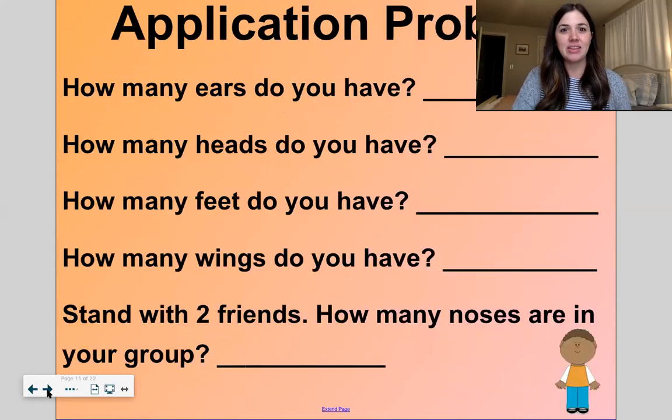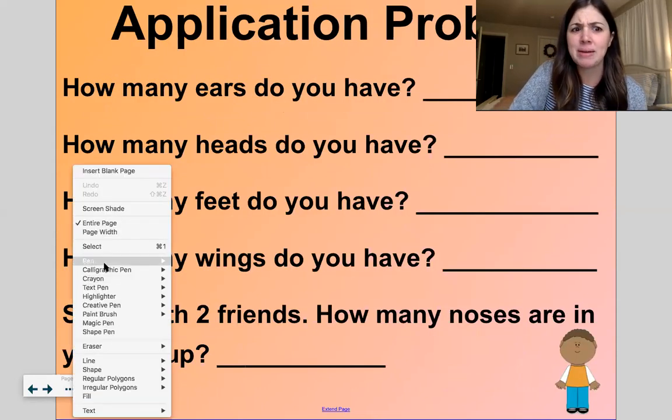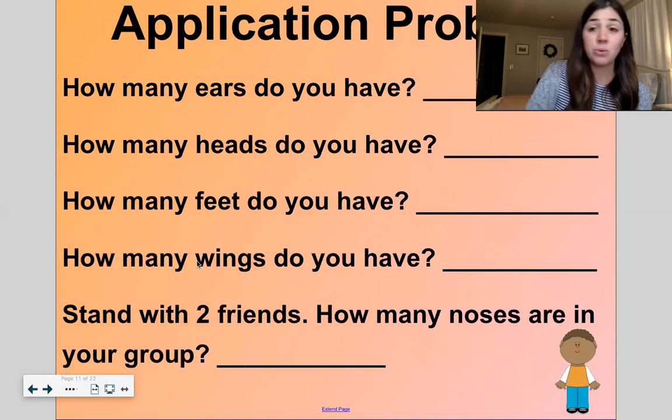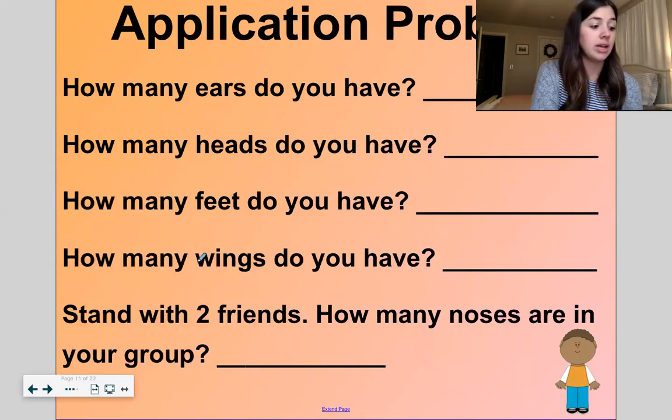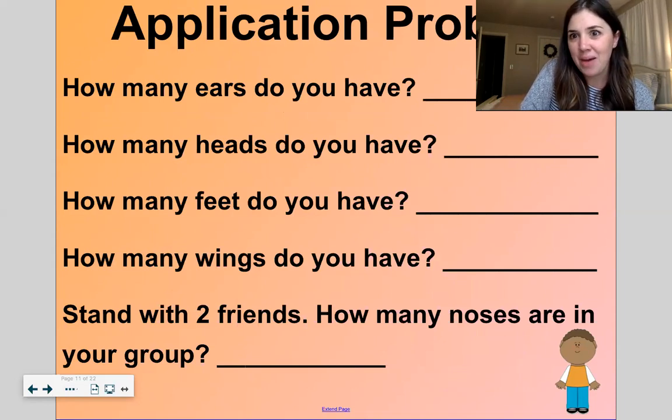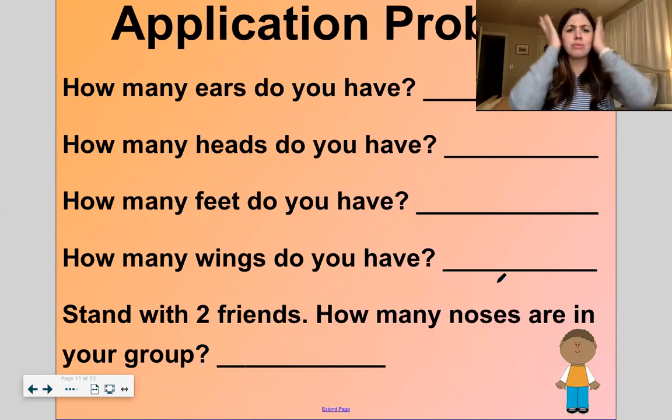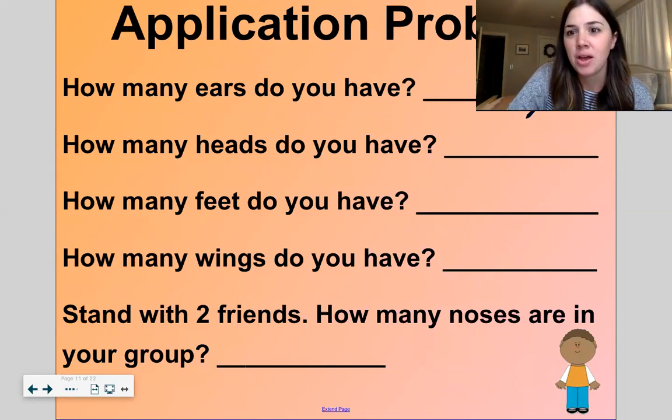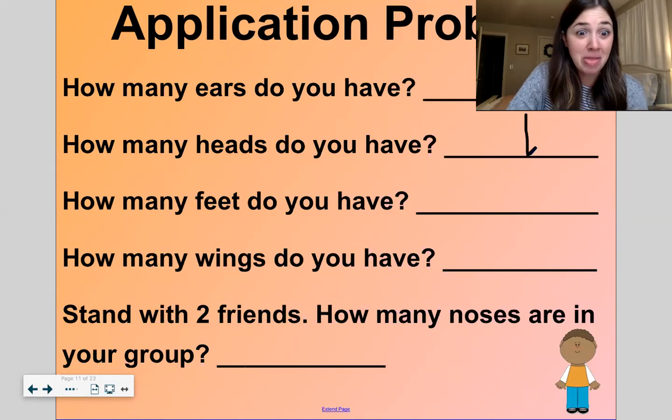All right. Now let's get into our application problem. And I'm going to get out my pen. And if you have something to write with, that would be cool. If you don't, you can just follow right along with me. Okay. How many ears do you have? One, two. I have two ears. So I'm going to write the number two. Make a moon. There's more work to do. Go to the right. That's a two. How many heads do you have? I have one. Straight line down. Then you're done. That's how you write a number one. How many feet do you have?